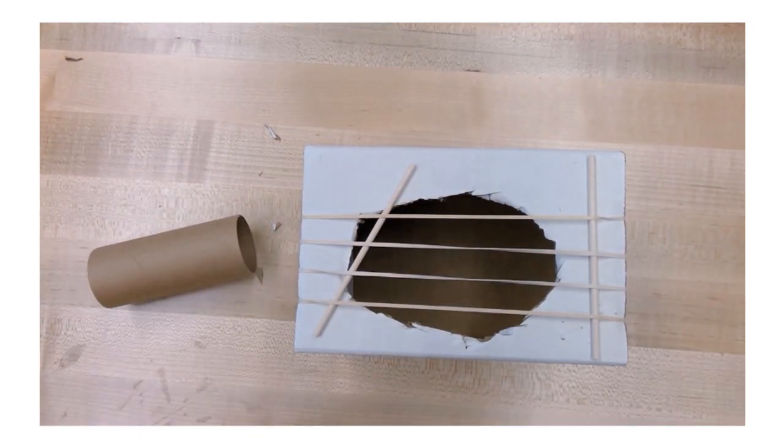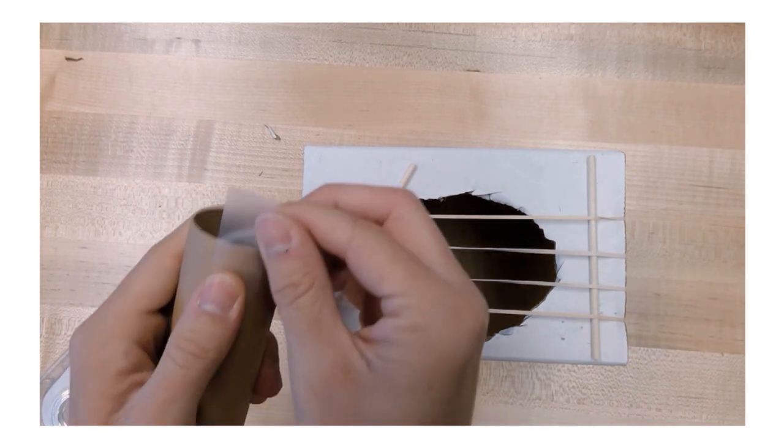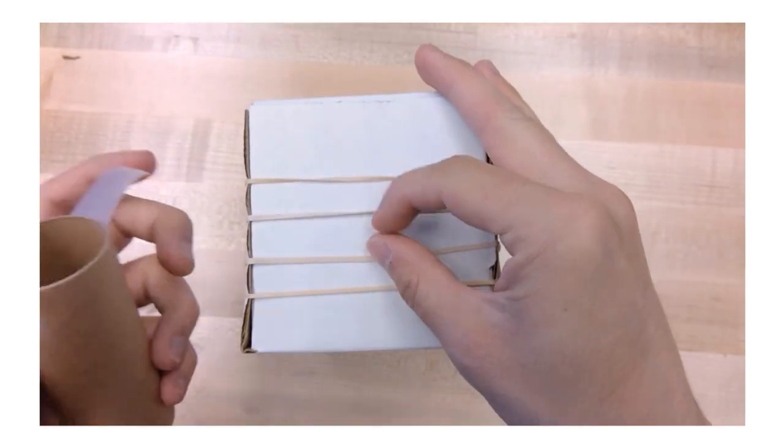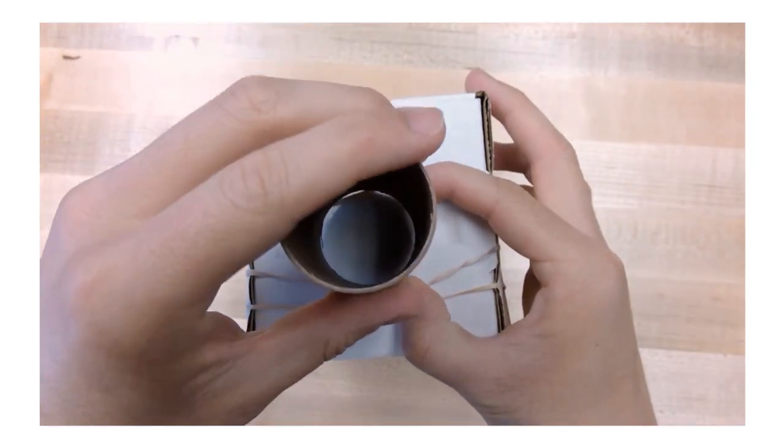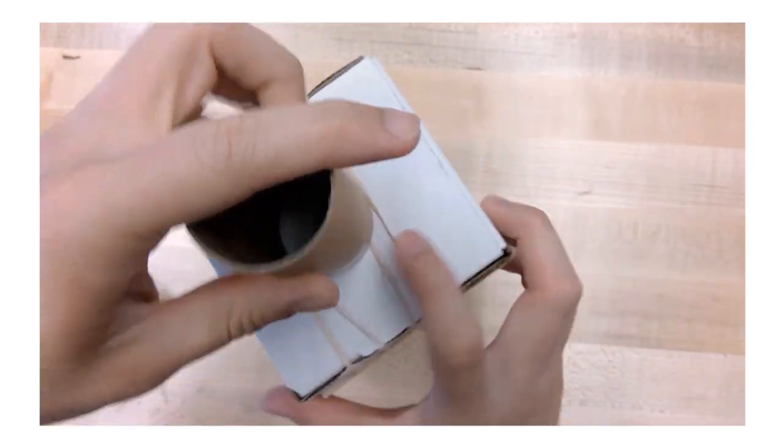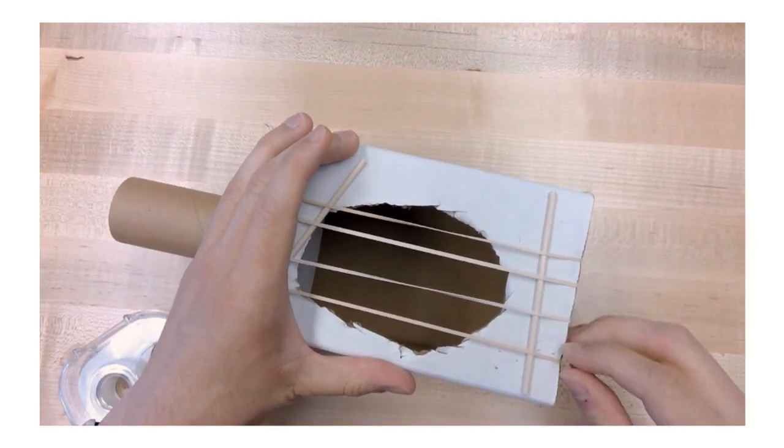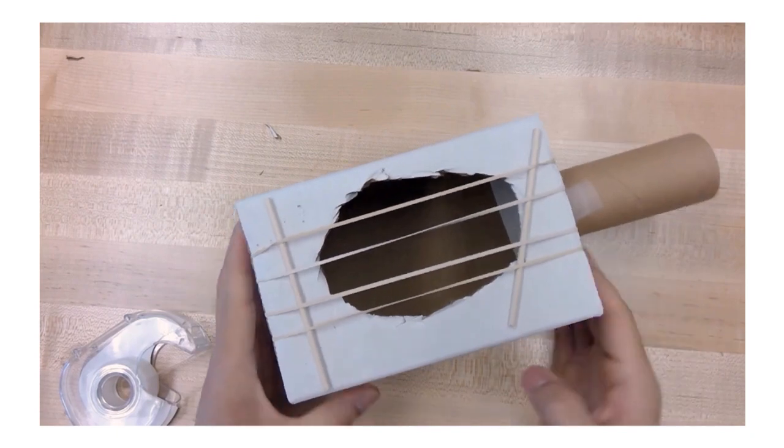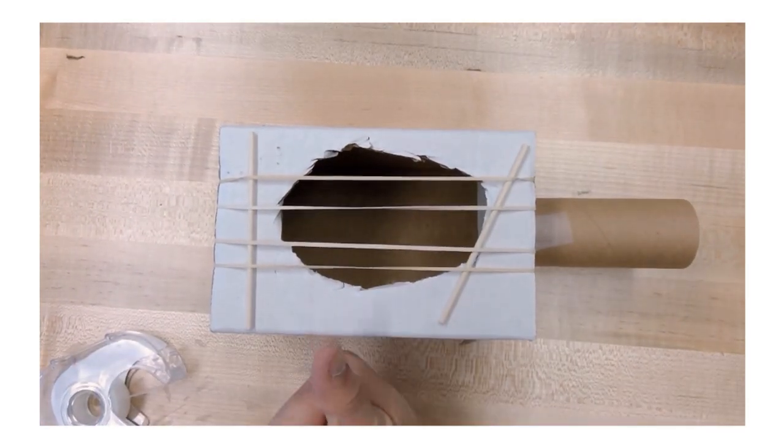On the side of the box with the angled dowel, tape the craft roll. This just helps us hold our guitar, so try not to tape over any rubber bands. Move them aside if necessary. And there you have it, a cardboard box guitar. Good job.